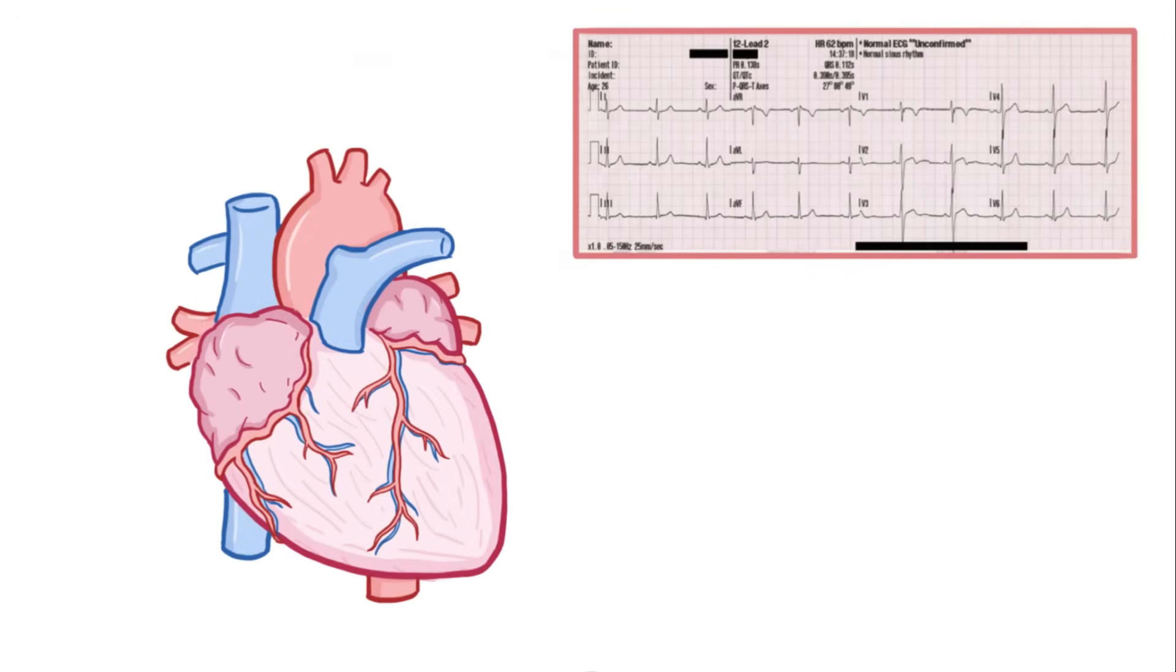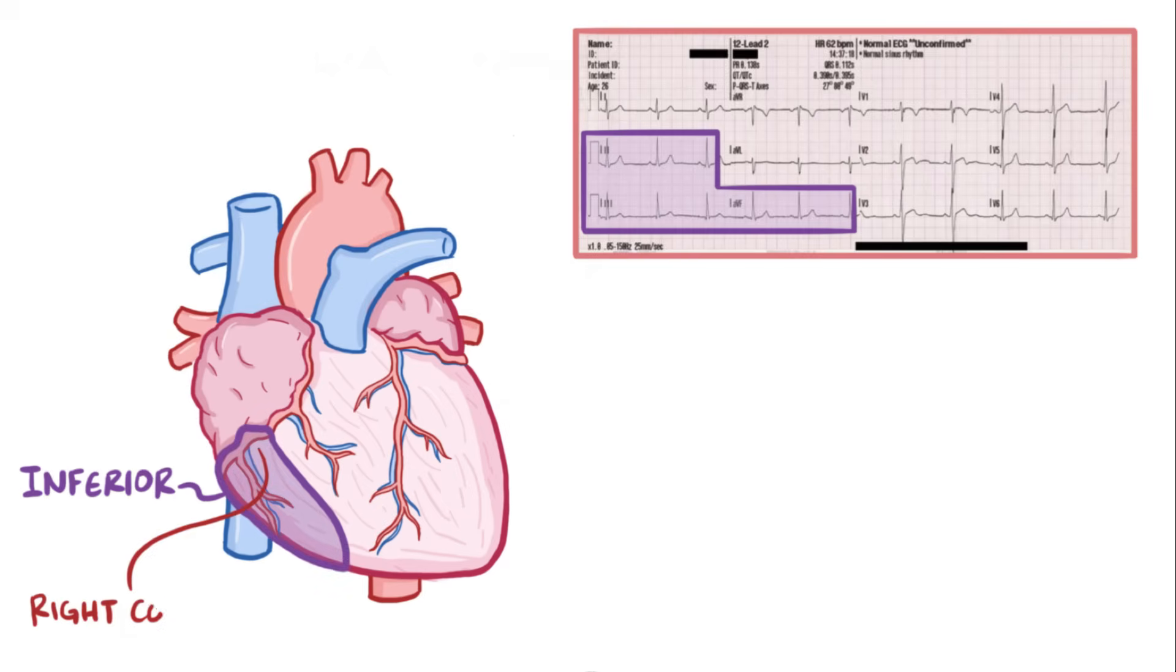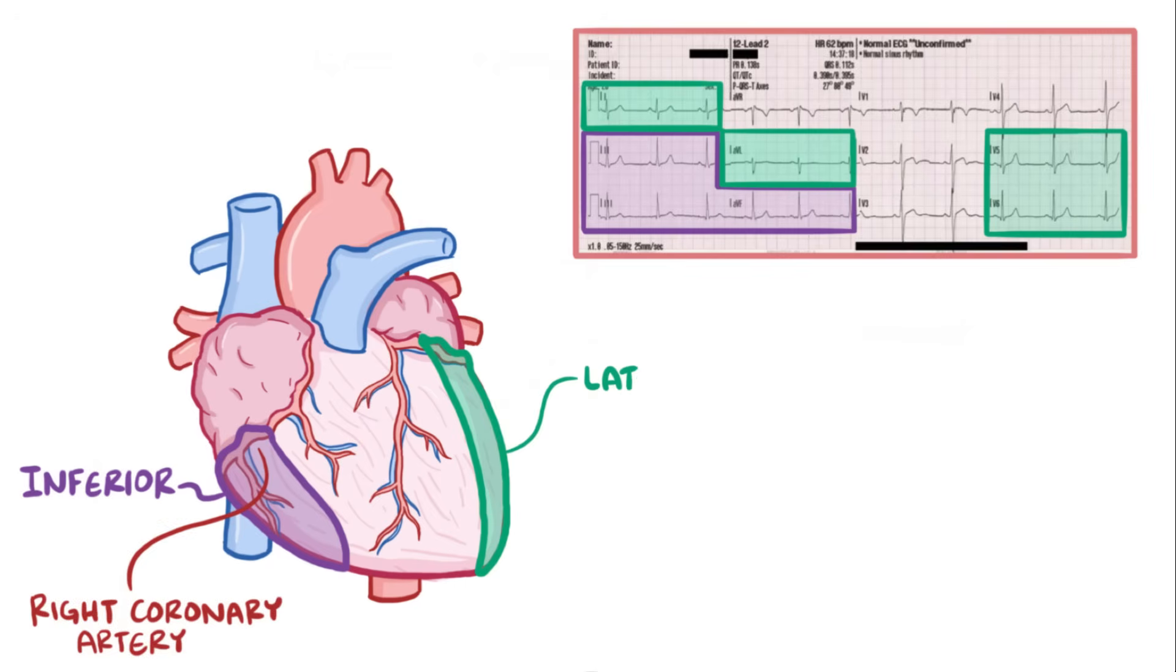Now all the limb leads and chest leads can be grouped based on the regions of the heart that they're nearest. Problems in specific leads or groups of leads suggest that there might be a specific region of the heart that might be affected by a disease. Leads 2, 3, and AVF are inferior leads because they're near the inferior wall of the heart which receives blood from the right coronary artery. Leads 1 and AVL, along with two of the chest leads, V5 and V6, are all considered lateral leads because they're near the lateral wall of the heart which receives blood from the left circumflex artery.